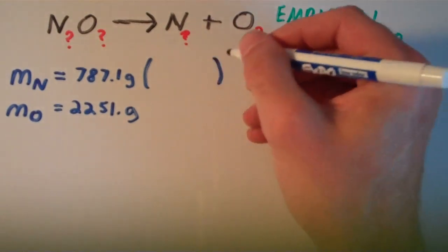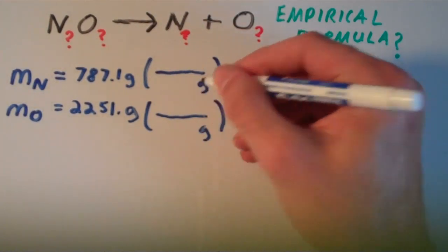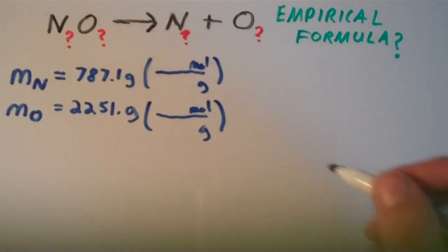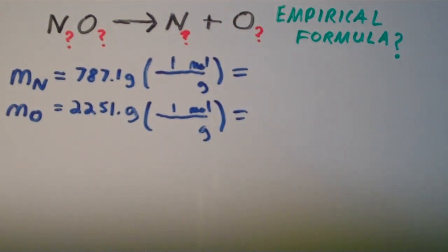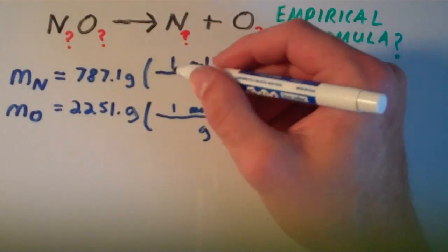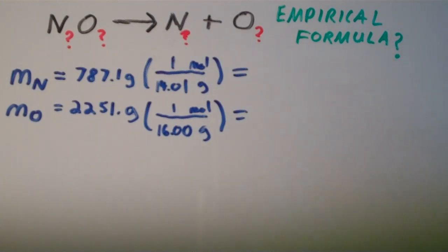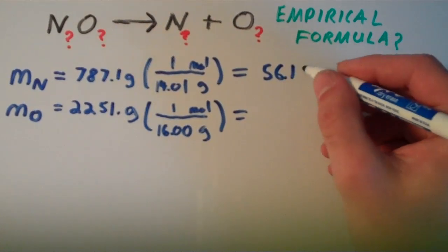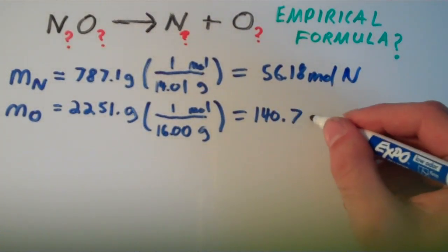We're going to set up two conversion factors converting each of these to moles, putting grams on the bottom and moles on top. We'll use the molar masses from the periodic table: nitrogen is 14.01 grams per mole and oxygen is 16.00 grams per mole. Carrying out this calculation, we get 56.18 moles of nitrogen and 140.7 moles of oxygen.